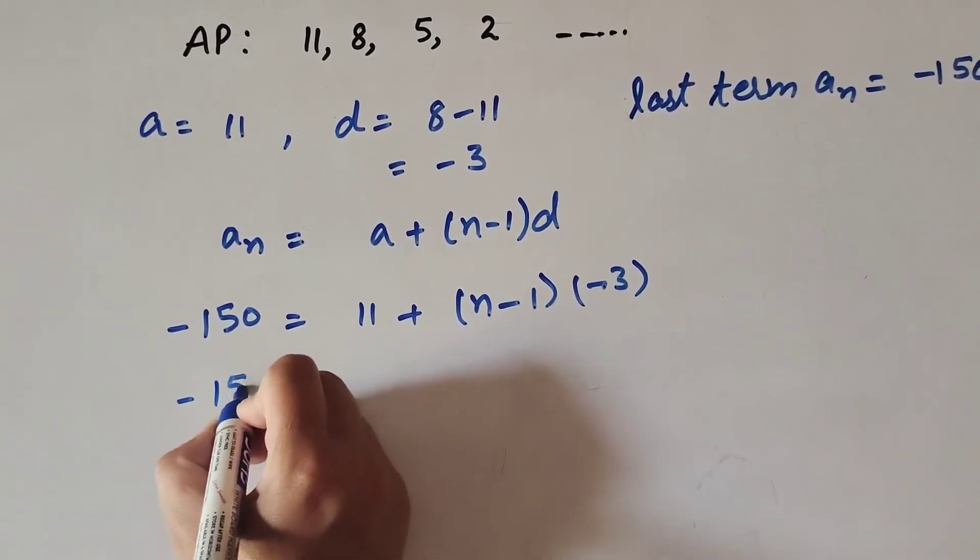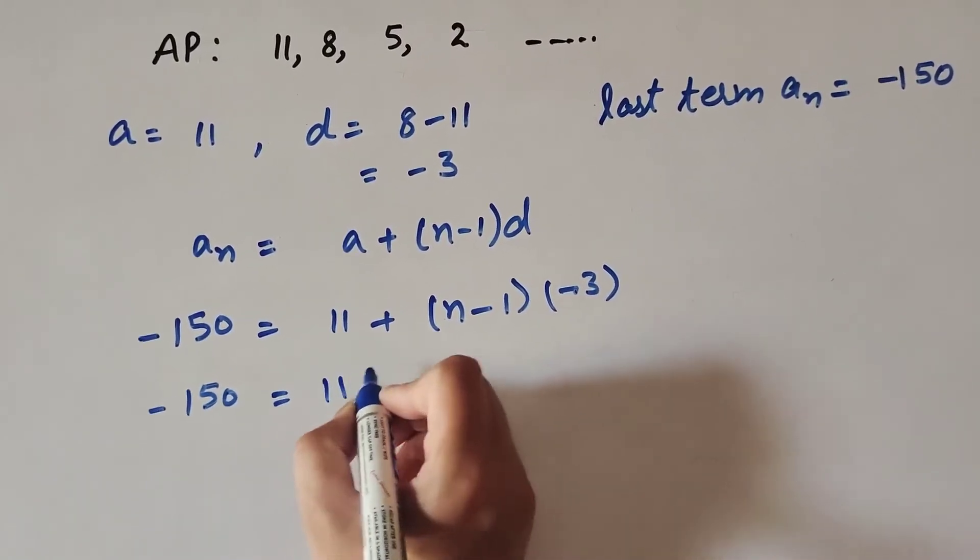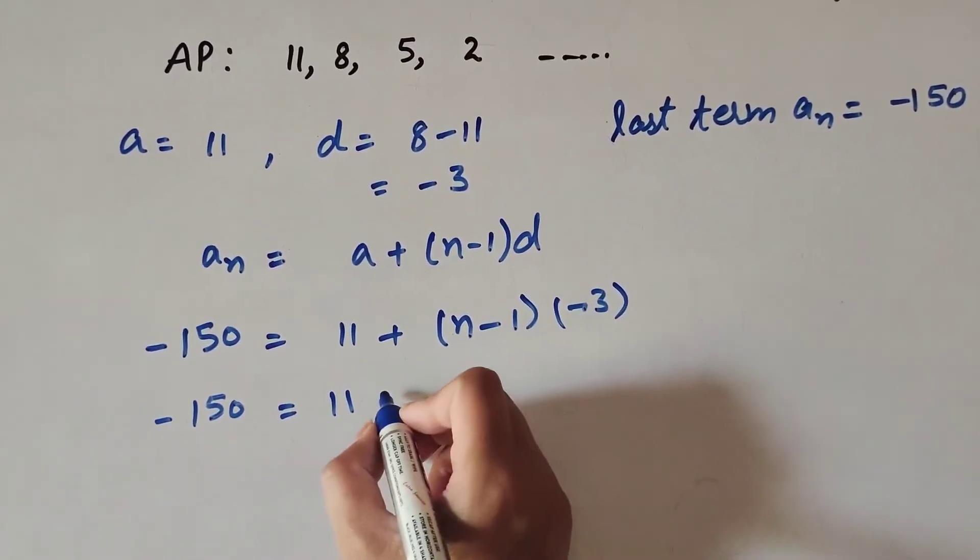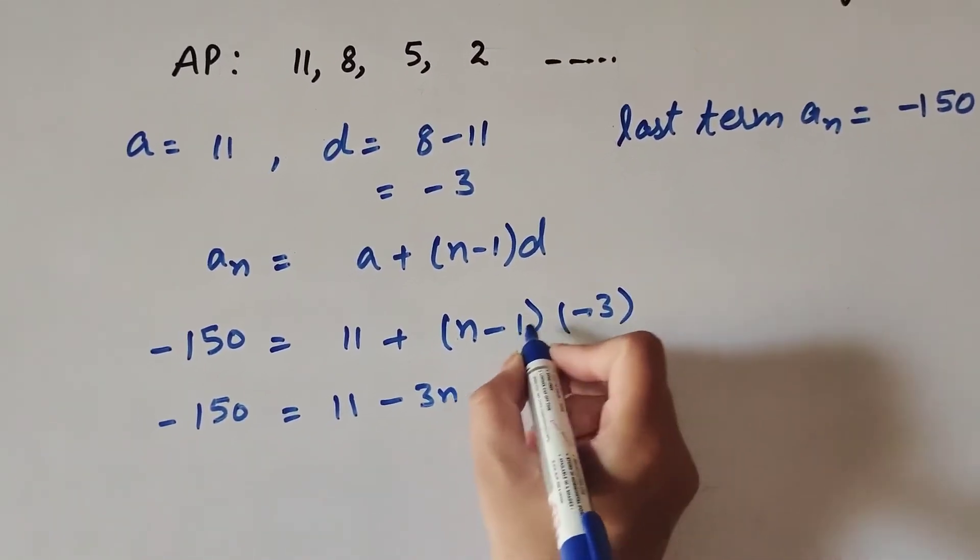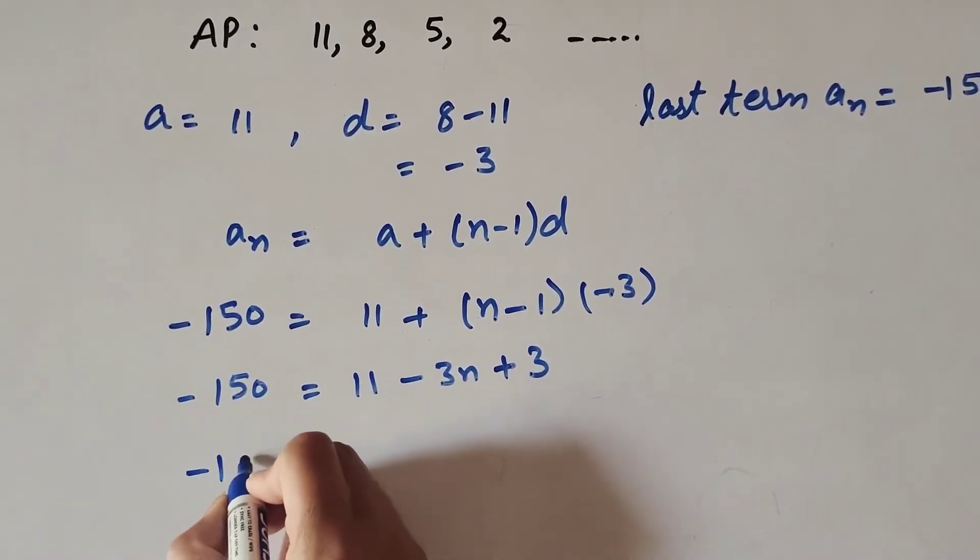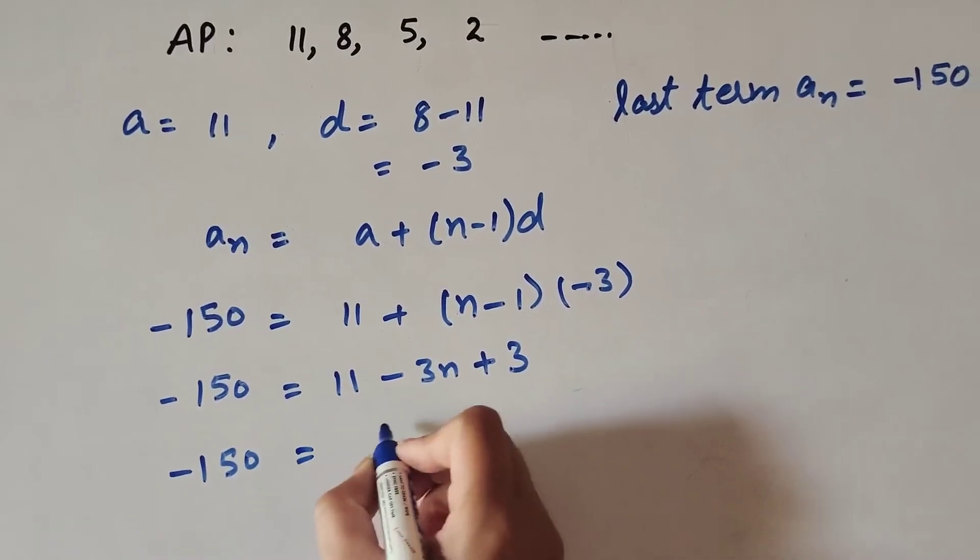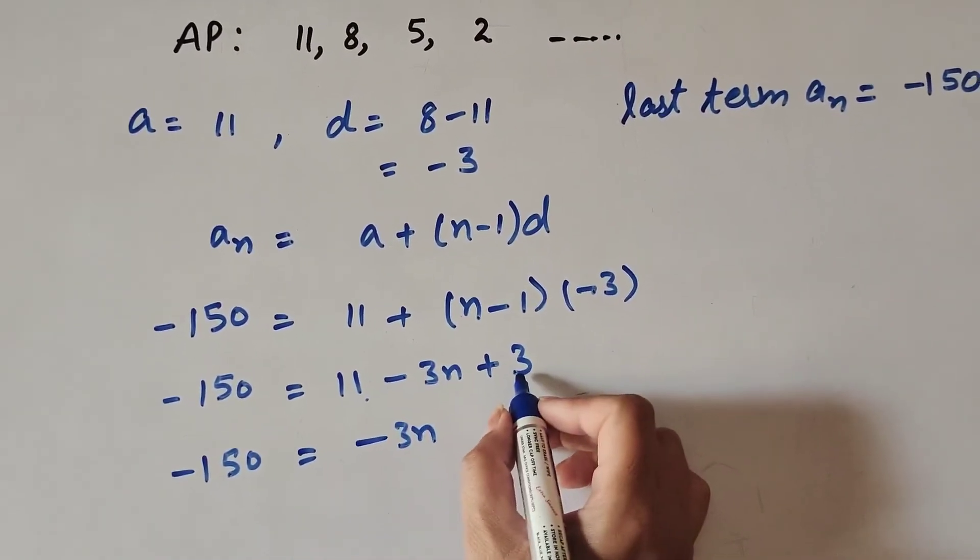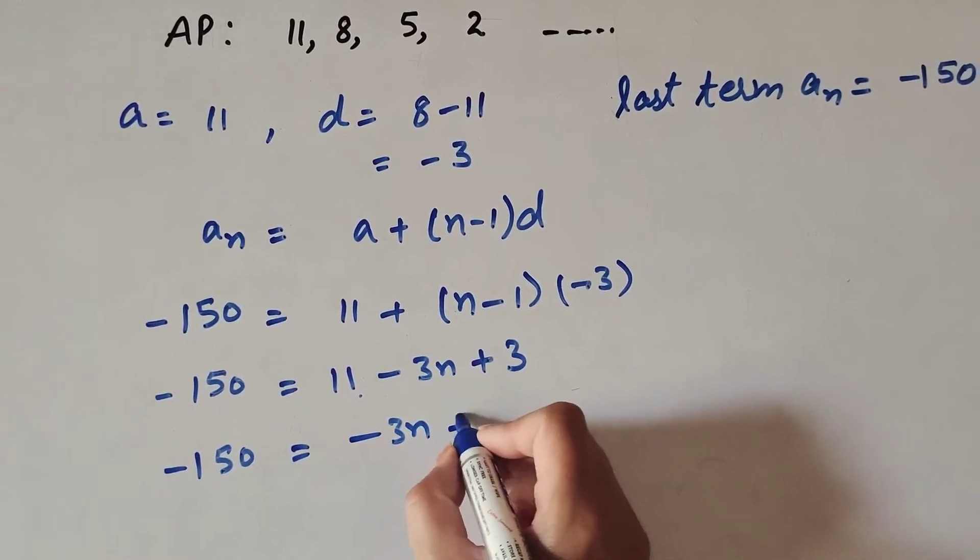-150 = 11 + (n-1)(-3). Multiplying by -3, we get -150 = 11 - 3n + 3, which equals -150 = -3n + 14.